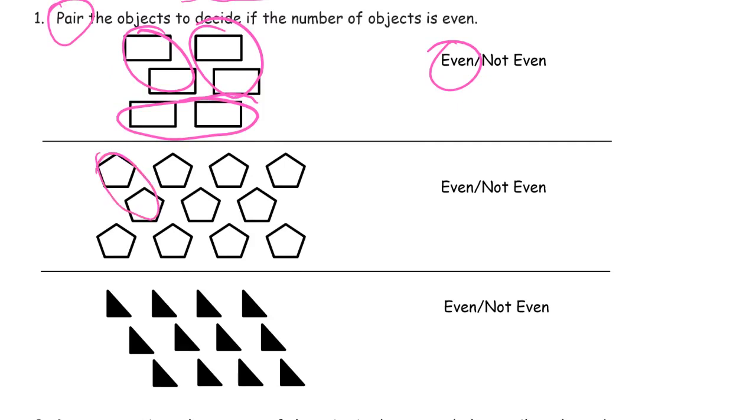So it's two, two, two, two, two, and there's one here. This guy has no partner, so it's not even.